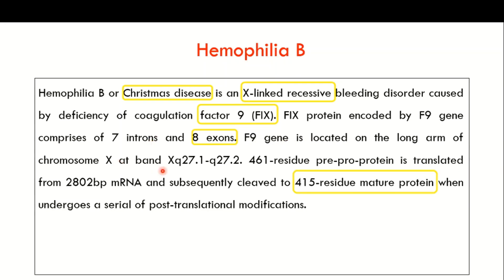The F9 gene is located on the long arm of chromosome X at band position Xq27.1 to Xq27.2. A 461-residue pre-pro protein is translated from the 2802 base pair messenger RNA coded by the F9 gene. This 461-residue pre-pro protein is subsequently cleaved to a 415-residue mature protein, which is the active factor 9. In hemophilia B, there will be a deficiency of this factor 9.